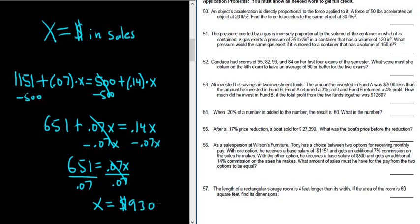That's the amount of sales, the amount in sales that he must make in order for the two options to be equal. So I hope this video has been helpful. That's it.